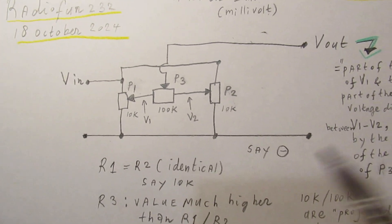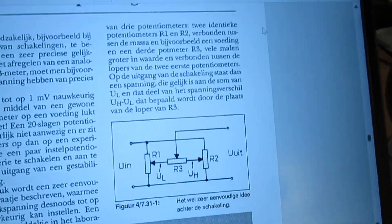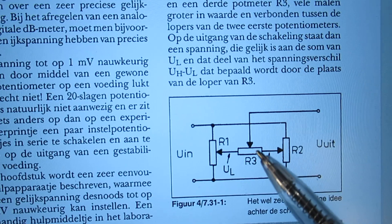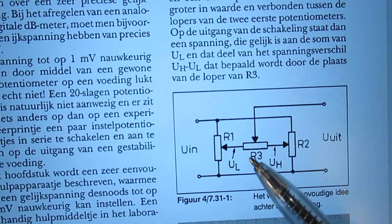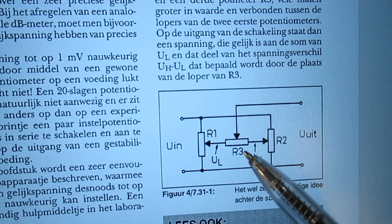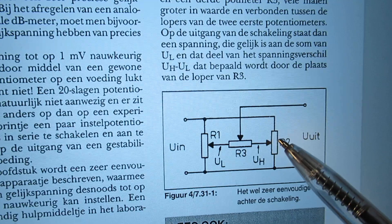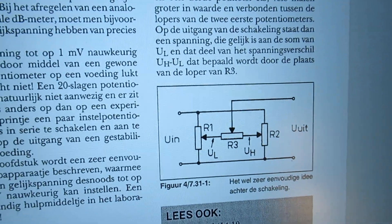And the book tells us here, that the value here, this one, R3, potentiometer 3, must be substantially higher compared to the value of potentiometer 1 and potentiometer 2.